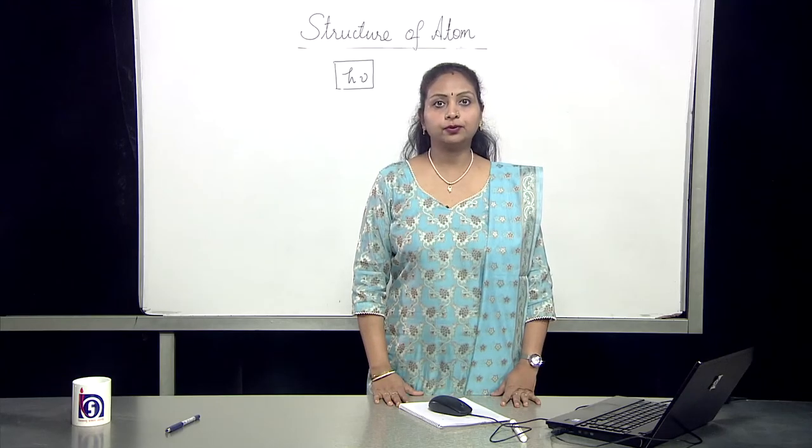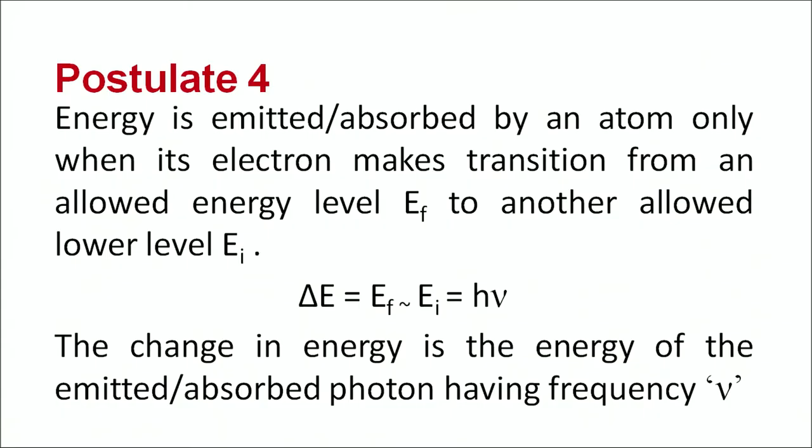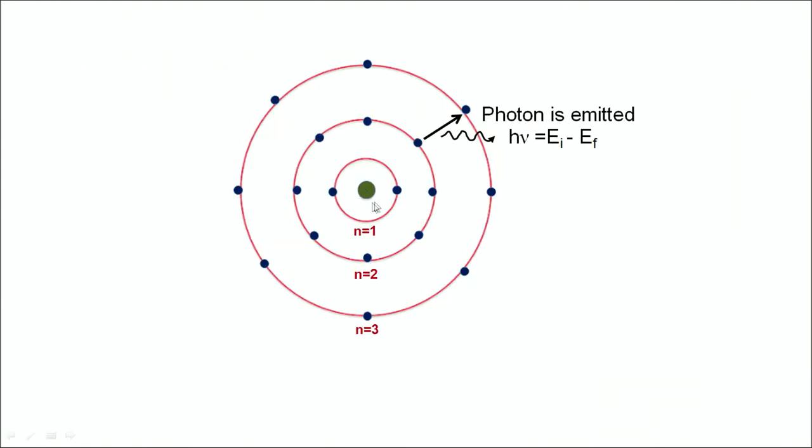According to fourth postulate the energy is emitted or absorbed by an atom only in discrete form, and that energy is equal to hν. From where does this discretization comes into picture? According to Bohr's model positive nuclei is at the centre and electrons are revolving in different orbits. When an electron for example sitting over here jumps from an inner orbit to an outer orbit then a photon of energy hν which is equal to E_i - E_f is emitted.